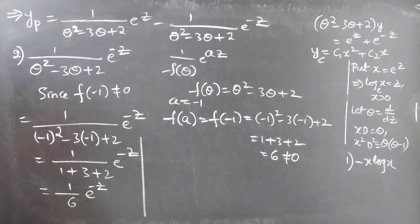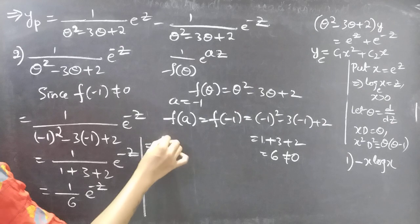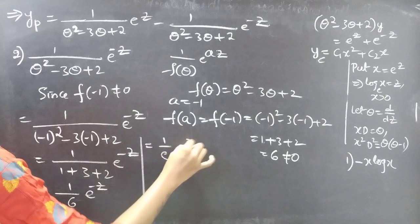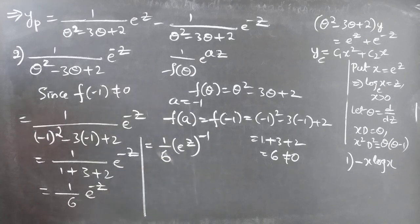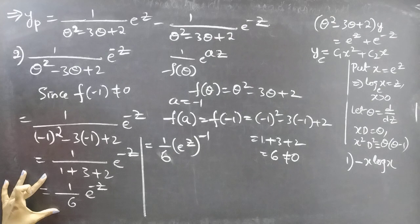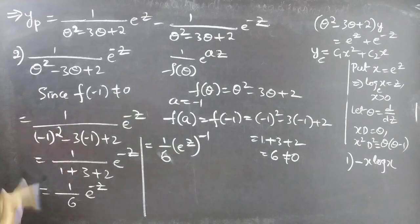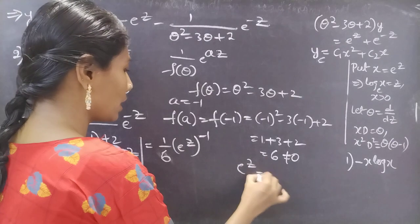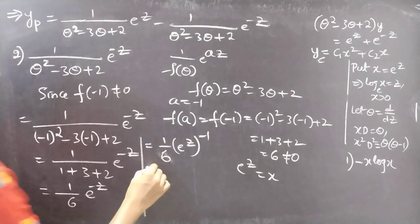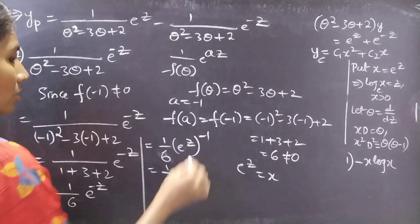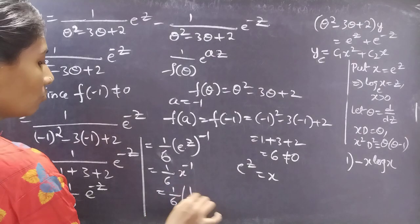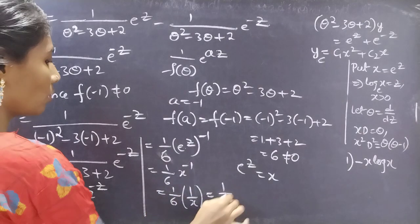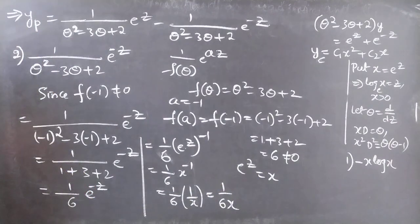We write e to the power minus z as (e to the power z) to the power minus 1. Since we need to write in terms of x, we replace e to the power z by x, giving x to the power minus 1, which is 1 by x. So the second term becomes 1 by 6x.